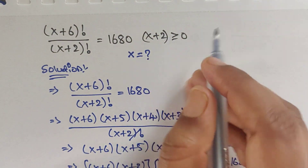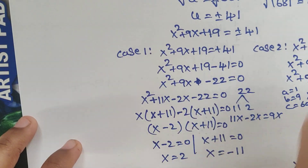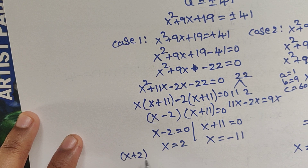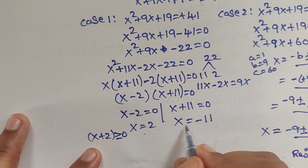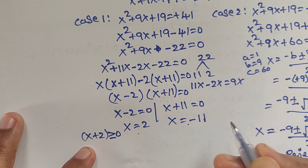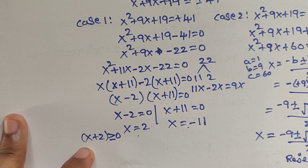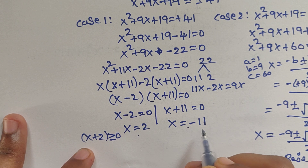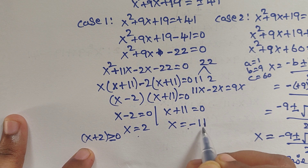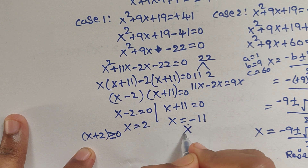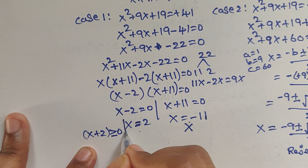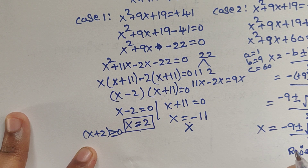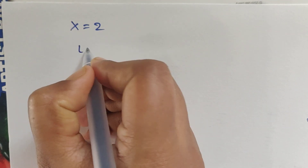We were given the condition that x+2 ≥ 0, so x must be a non-negative number. Therefore x = −11 gives a negative value, which does not satisfy the condition. So x = 2 is the solution.